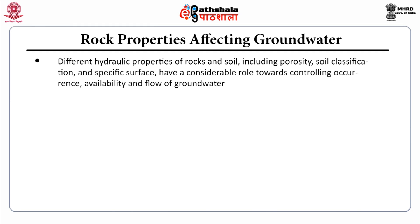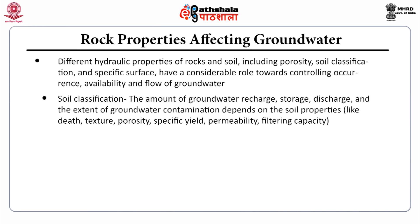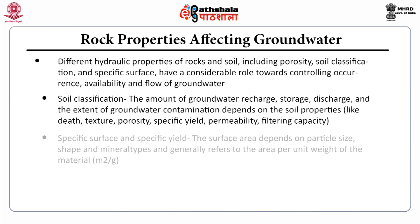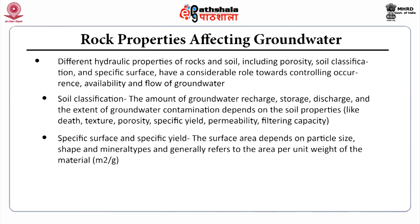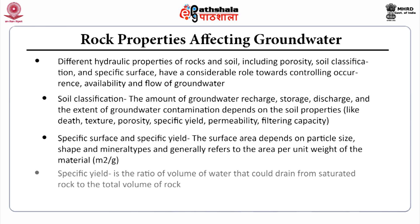Rock properties affecting groundwater: different hydraulic properties of rock and soil, including porosity, soil classification, and specific surface, have a considerable role in controlling the occurrence, availability, and flow of groundwater. The amount of groundwater recharge, storage, discharge, and the extent of groundwater contamination depends on soil properties like texture, porosity, specific yield, permeability, and filtering capacity. Specific surface and specific yield: the surface area depends on particle size, shape, and mineral types, and generally refers to the area per unit weight of the material. Specific yield is the ratio of the volume of water that could drain out from saturated rock to the total volume of rock.